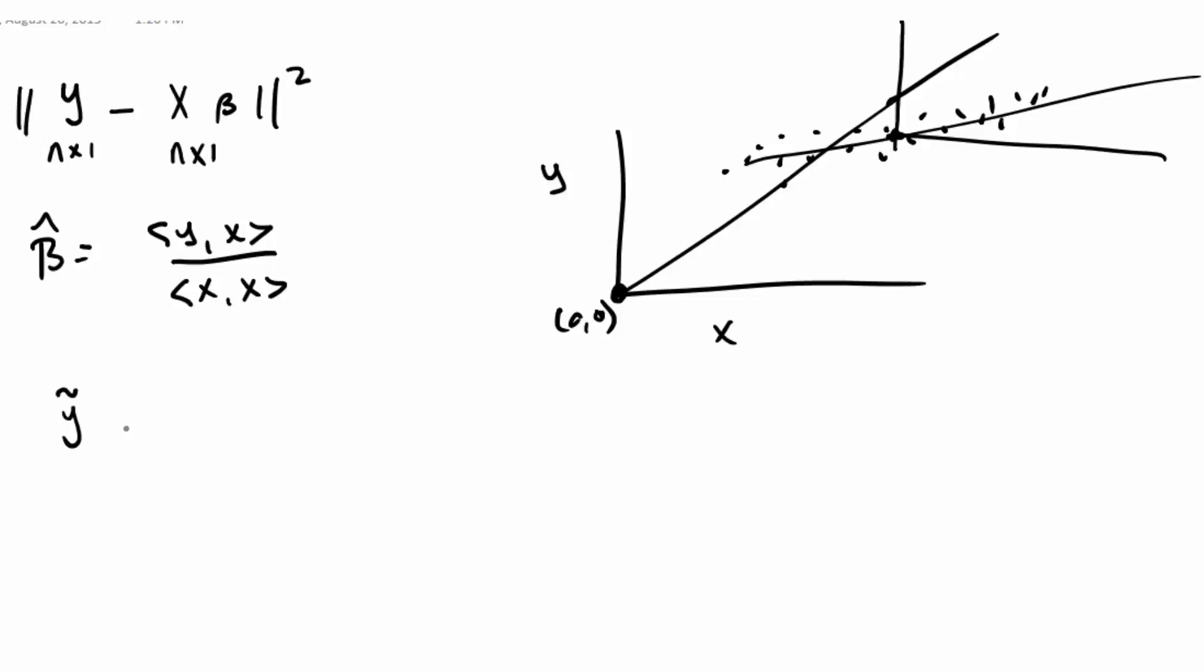Well, we would just say let's define y tilde as the centered version of y, one where we've subtracted off the mean from every data point so that it now has mean zero. And then this is ostensibly just shifting the origin right into the middle of the data set. So that would just be I minus Jn, Jn transpose, Jn inverse, Jn transpose times y.